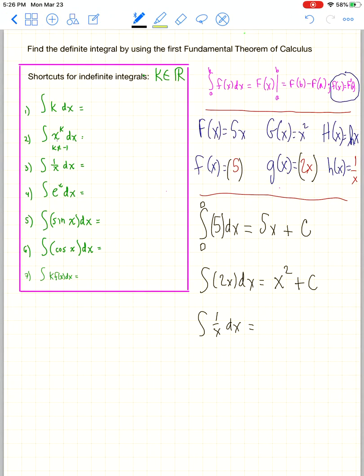Remember, 1 over x was the answer when you did the derivative ln of x. So the antiderivative of 1 over x is ln of x, and you need that plus c because there's no definite integral signs and no interval given.